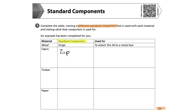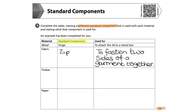Let's start by looking at fabric as the material area. Standard components often used with fabric include zips, buttons, poppers, press studs, velcro, sequins, beads and many more. If textiles isn't your material area, just look at the clothes you are wearing and use your knowledge of standard components within your specialist material area. Here, I am going to select a zip, which is a common component most will be familiar with. The function of a zip is to fasten two sides of a garment together, bringing two pieces of fabric together.